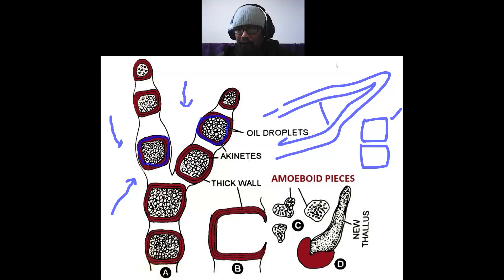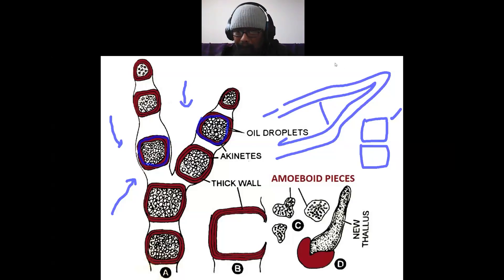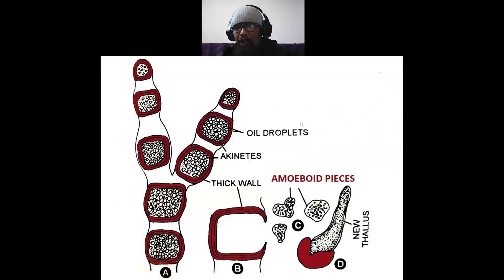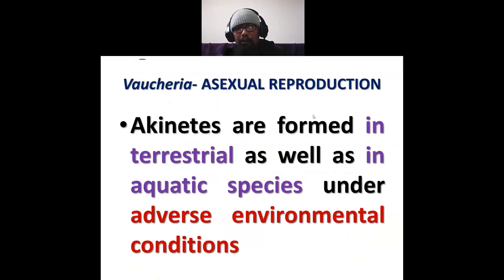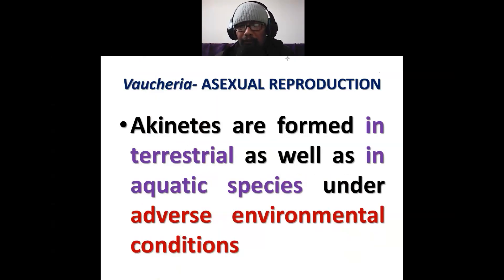Akinetes survive — they perennate, they pass over unfavorable conditions, even after breaking off the parent wall. On approach of favorable conditions, they germinate and give rise to a new vegetative thallus.